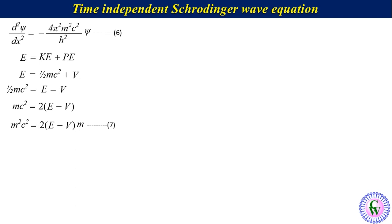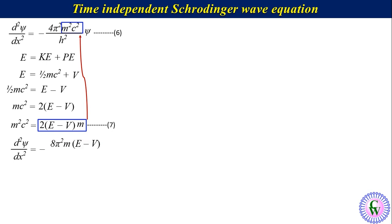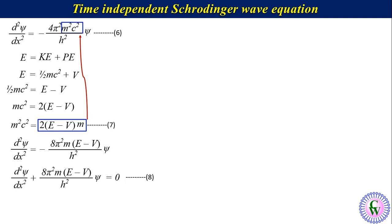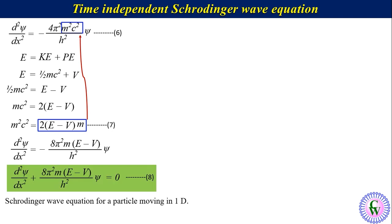Putting the value of m²c² from equation 7 into the previous equation gives d²ψ/dx² equals minus 8π²m(E minus V)/h² times ψ. Or, d²ψ/dx² plus 8π²m(E minus V)/h² times ψ equals 0, equation number 8. This equation is called the Schrödinger wave equation for a particle moving in one dimension, the x direction.